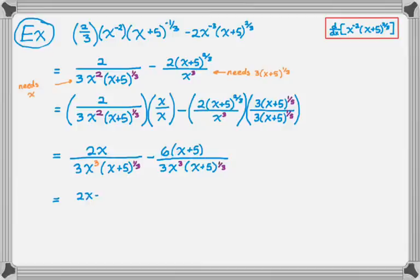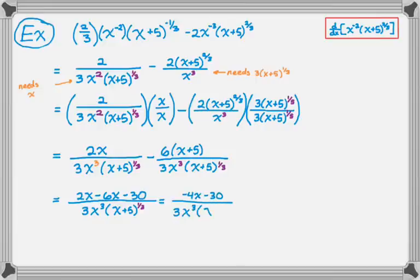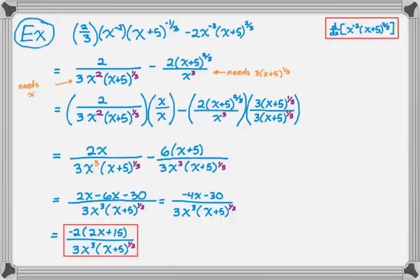I can clean this up: minus 6x minus 30, over the common denominator. Bringing those together and finally factoring out a negative 2, I get the final simplified result. My advice when dealing with these kinds of problems is to make everything have positive exponents first, and then it becomes the arithmetic of fractions you're used to — getting common denominators and working from there.